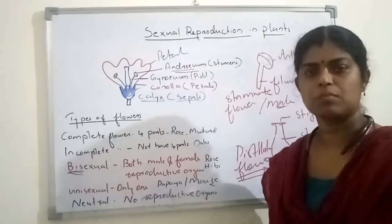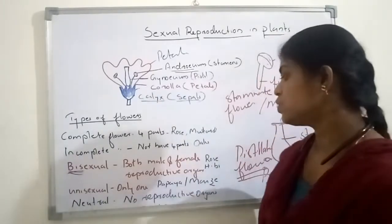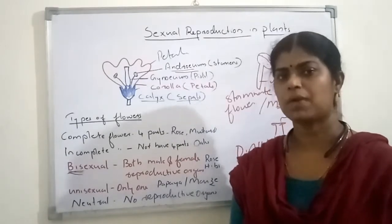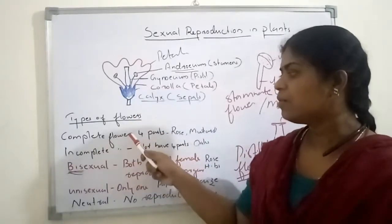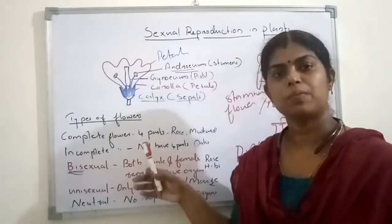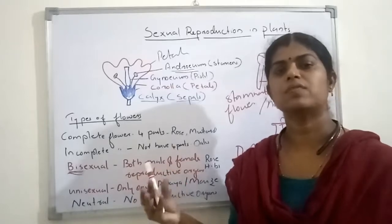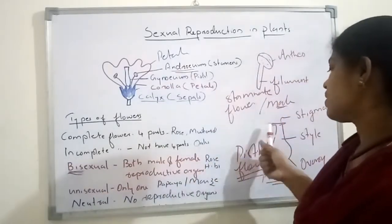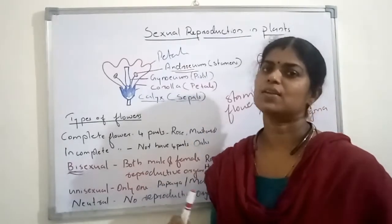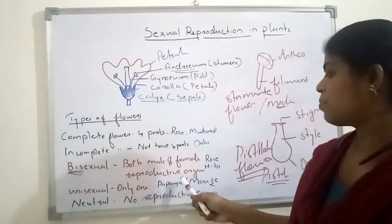Sometimes flowers have neither reproductive organ — no male and no female. That kind of flower is known as a neutral flower. The main florets of sunflower are that kind of flower. So the categories are: complete flower has all four whorls; incomplete flower has any whorl missing; bisexual flower has both male and female reproductive organs; unisexual flower has only one type — pistillate (female) or staminate (male); and neutral flower has no reproductive organs. Papaya and maize are examples of unisexual flowers, and rose and hibiscus are examples of bisexual flowers.